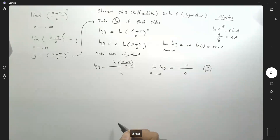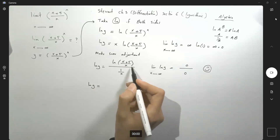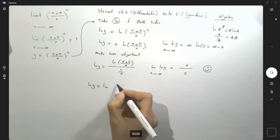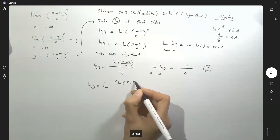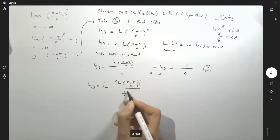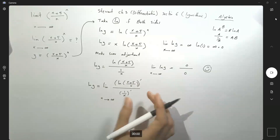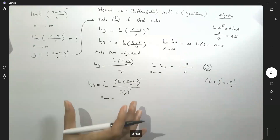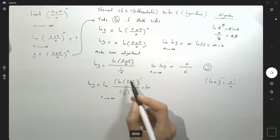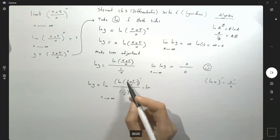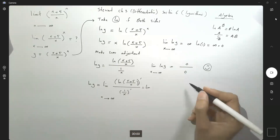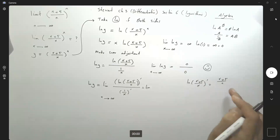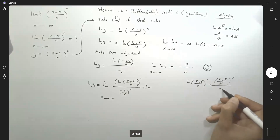Applying L'Hôpital's rule, ln of y equals the limit of the derivative of ln of (x + 5)/x over the derivative of 1/x, as x approaches infinity. Remember that the derivative of ln of u is u prime over u. So on the numerator, you have the derivative of ln of (x + 5)/x, which is the derivative of (x + 5)/x divided by (x + 5)/x.